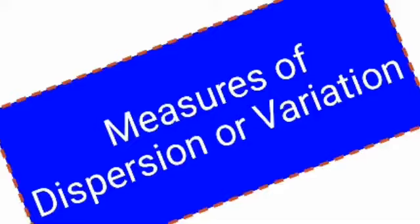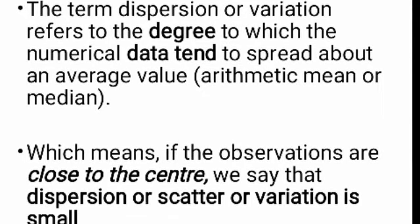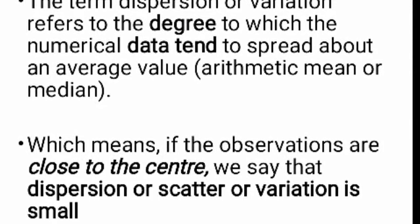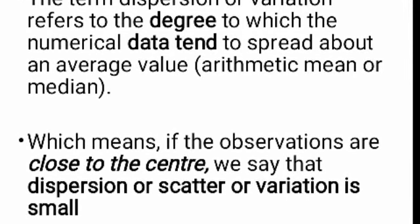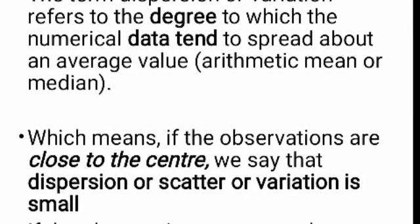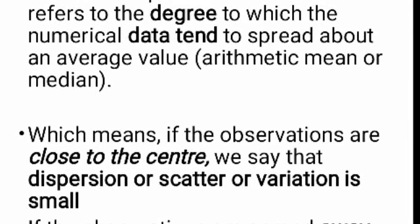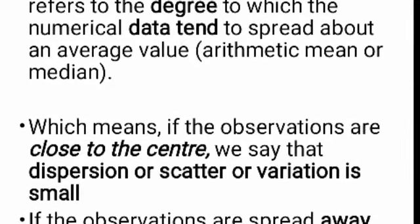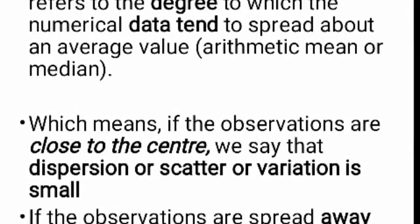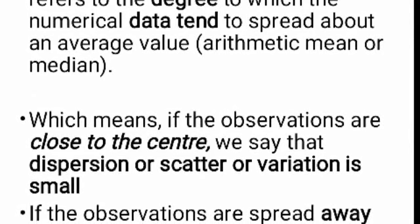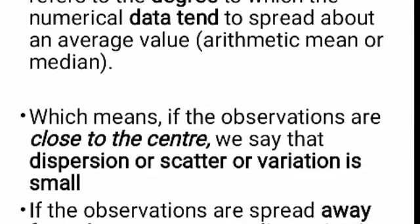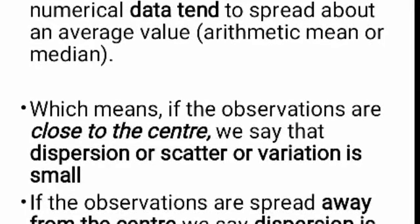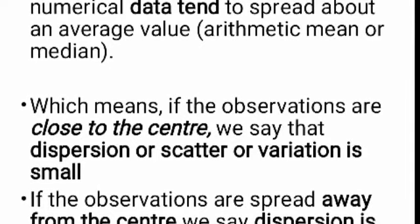Here we want to understand what is dispersion or variation. The term dispersion or variation refers to the degree to which the numerical data tends to spread above the average value, which means this is the degree of change or degree of variance from the central value, which means arithmetic mean or median. Here we calculate how close the values are to the center of the distribution. If the observations are close to the center, we say that dispersion or scatter or variation is small, which means all observations are around the mean or median. Such type of variations are small dispersions.